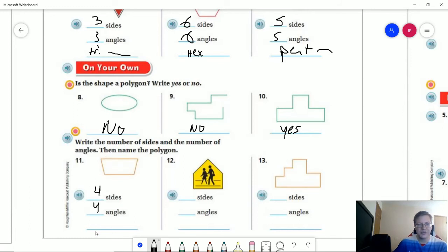Number eleven we have four sides, four angles and this would be our quadrilateral. This one for number twelve would be a five-sided object which would be a pentagon. We have five sides, five angles.